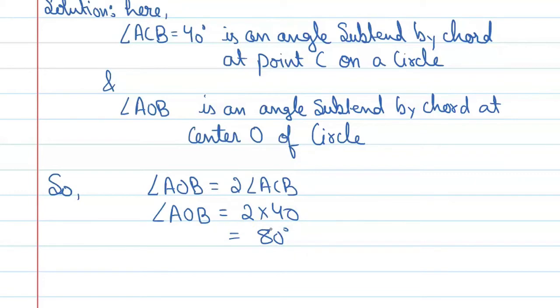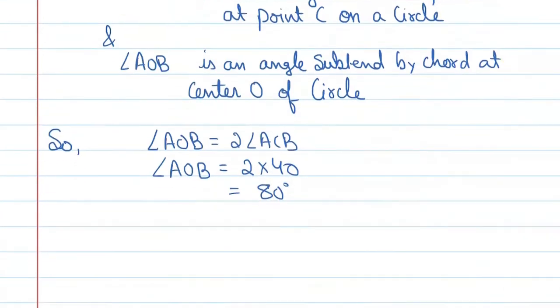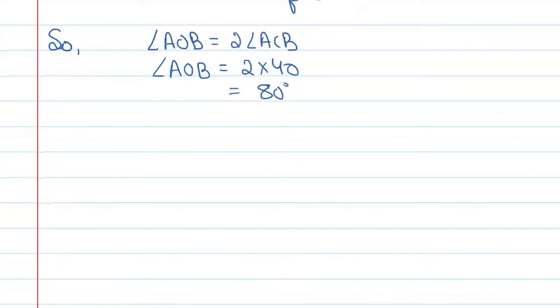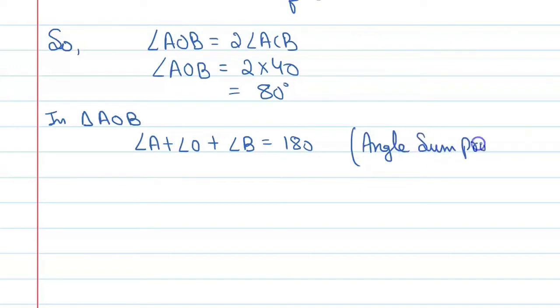Now, let's talk about triangle AOB. In triangle AOB, angle A plus angle O plus angle B is equal to 180 degrees. Reason: by angle sum property.